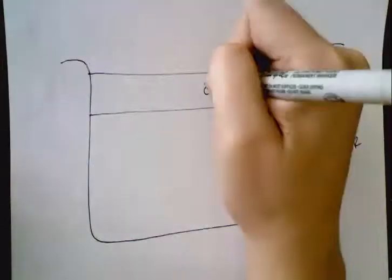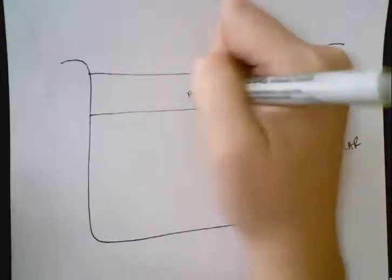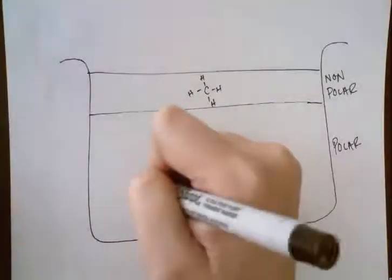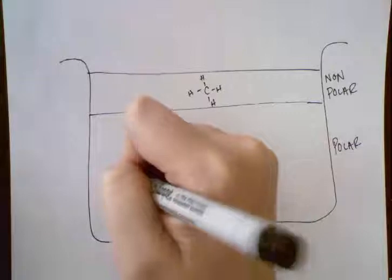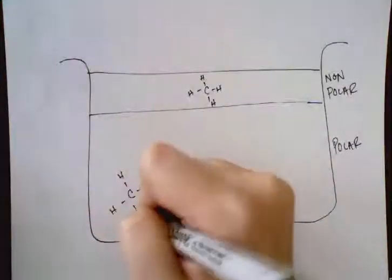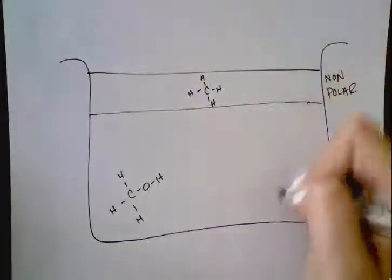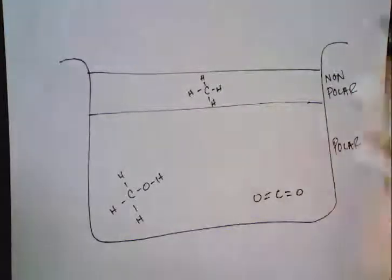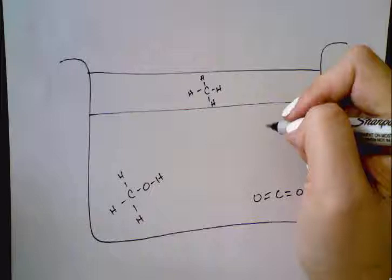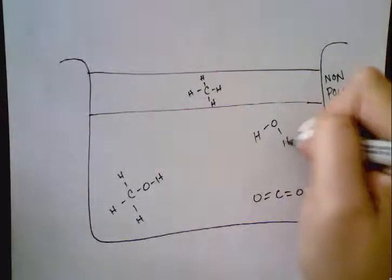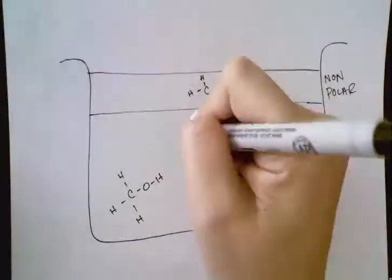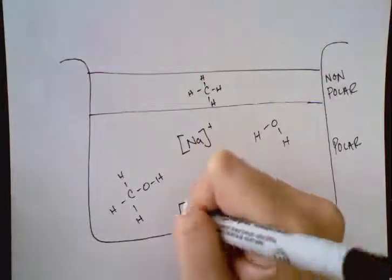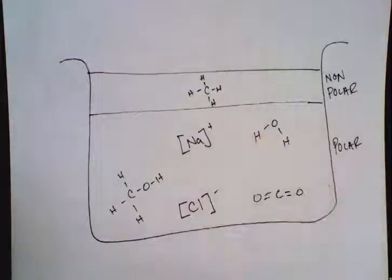So we've already determined what layer everything goes in, so we have methane up at the top here. We determine, sorry, methanol goes here. We know carbon dioxide is going to go in here. We know water is going to go in here. And we also know our ions are going to go in here. They don't have to be close.